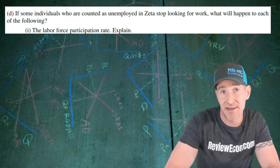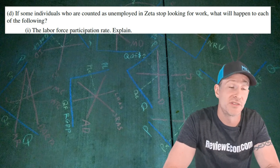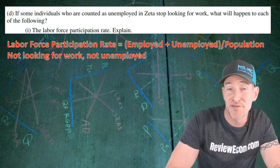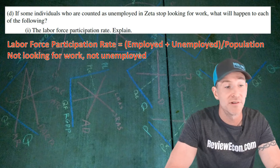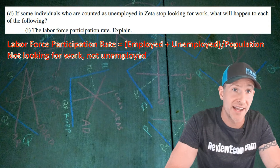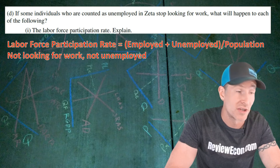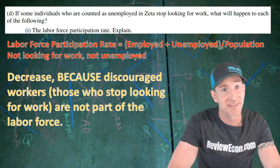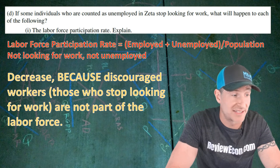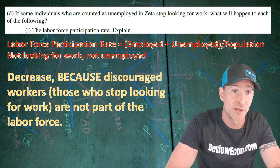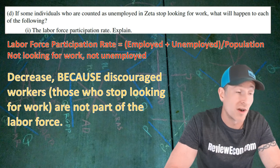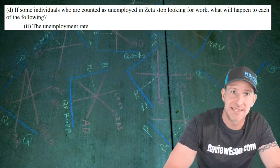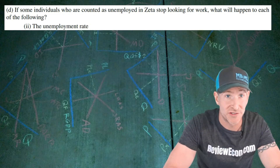For part D, if some of the individuals counted as unemployed stop looking for work, what will happen to the labor force participation rate? We need to remember that the labor force participation rate is employed plus unemployed people divided by the population. Once you are not looking for work, you are not considered unemployed and are no longer in the labor force. The answer is decrease, because discouraged workers — unemployed workers who stop looking for work — are not part of the labor force. That explanation gets you the next point.